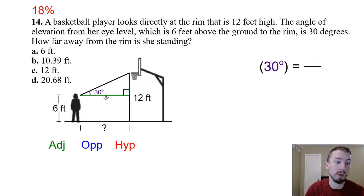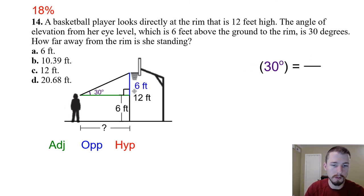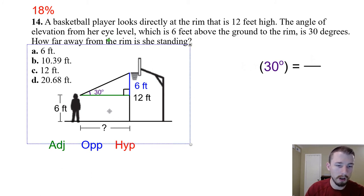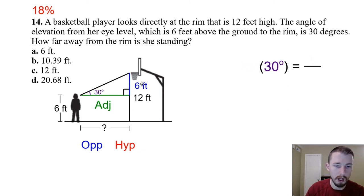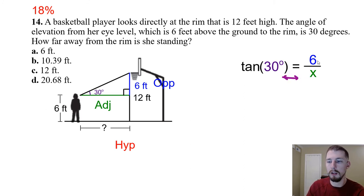Number fourteen — a basketball player's eyes are 6 feet above the ground, the rim is 12 feet high, and the angle of elevation from her eye level is 30°. The triangle starts at her eye level (6 ft), so the opposite side is 12 − 6 = 6 feet. The adjacent side is the horizontal distance x. Using tangent: tan 30° = 6 / x. Since x is on the bottom, switch the order: x = 6 / tan 30° ≈ 10.39 feet. Answer: B.